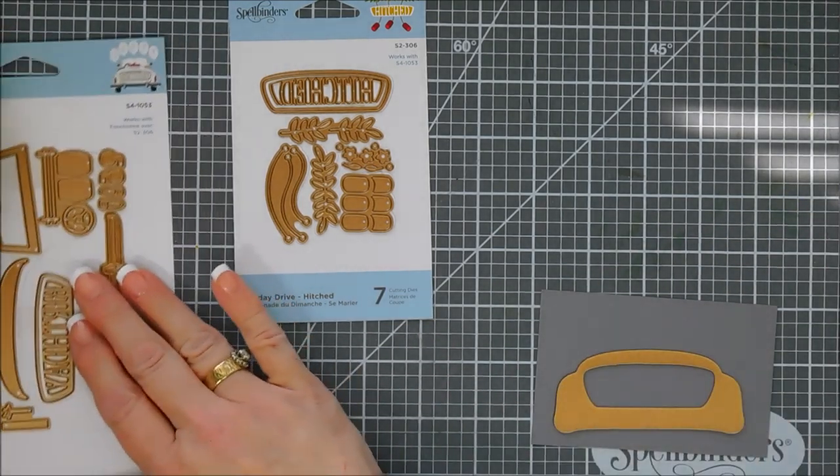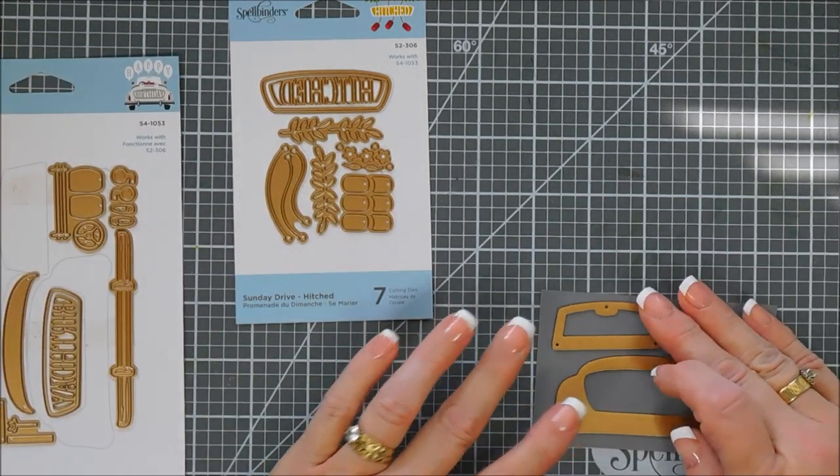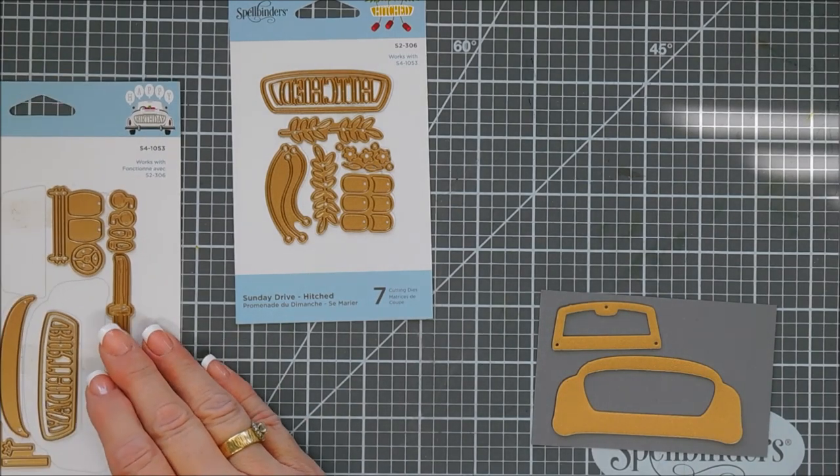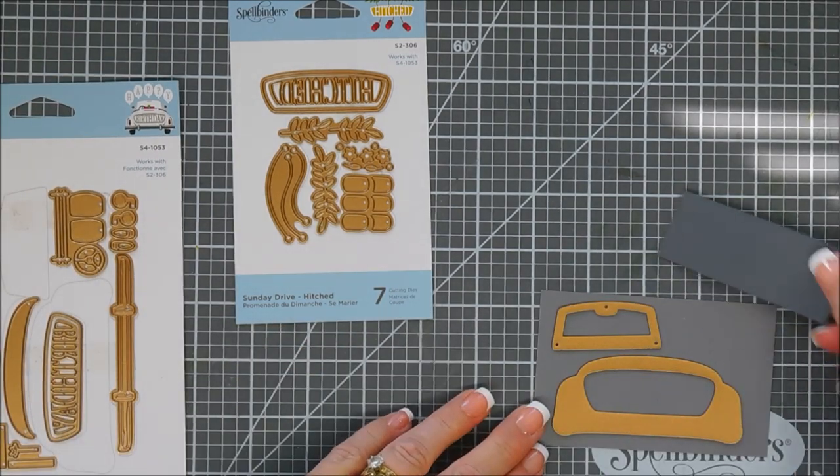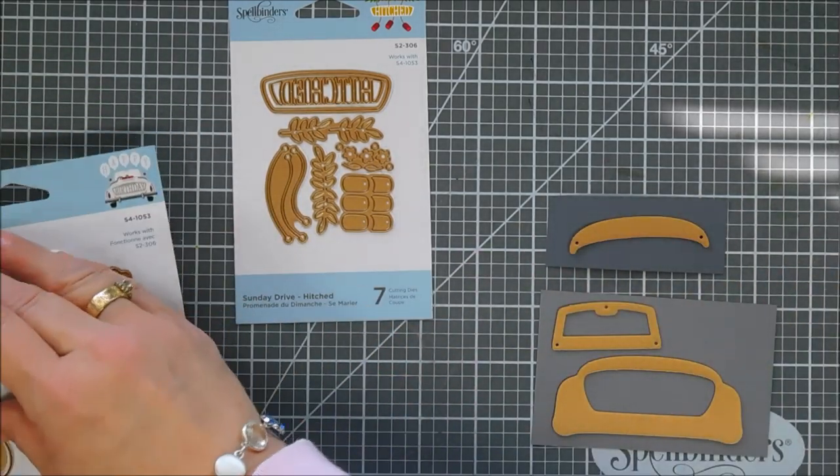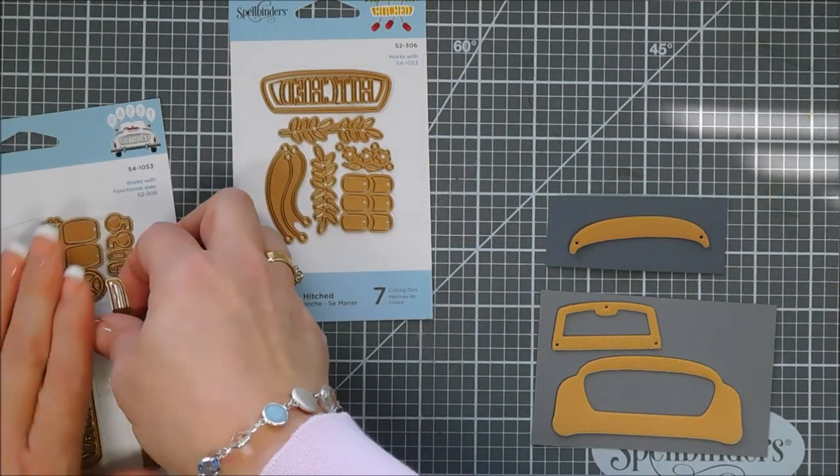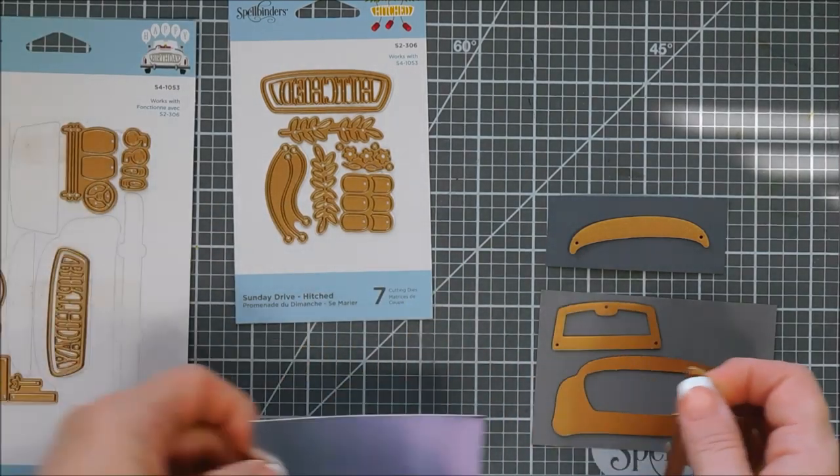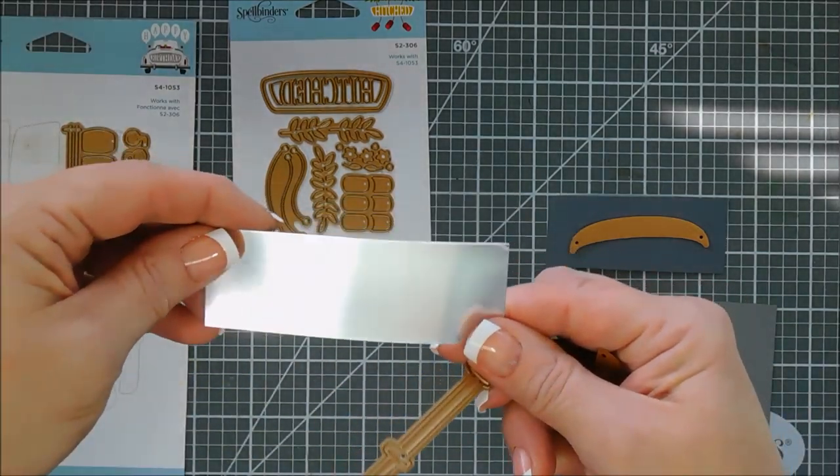I thought we would do a monochromatic background so we're bringing in some grays. We're going to use two different shades of gray - a medium and a dark gray. The medium gray that we're using is Riverstone and then we have our dark gray which is Rock Candy.